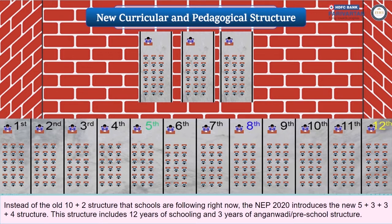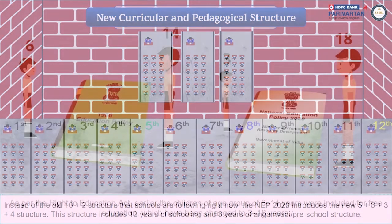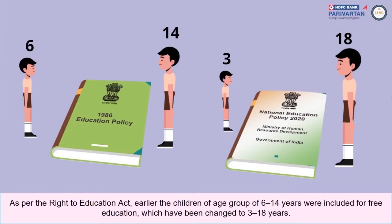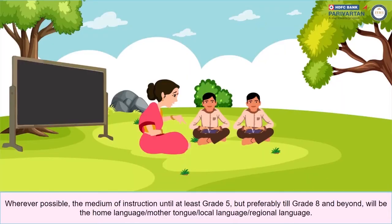This is a new curricular and pedagogical structure given by NEP 2020. As per the Right to Education Act, earlier children of the age group 6 to 14 years were included for free education, which has been changed to 3 to 18 years. Wherever possible, the medium of instruction until at least Grade 5 — but preferably till Grade 8 and beyond — will be the home language, mother tongue, local language, or regional language.